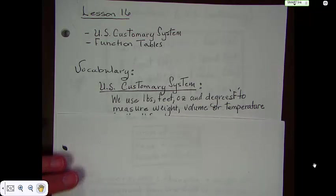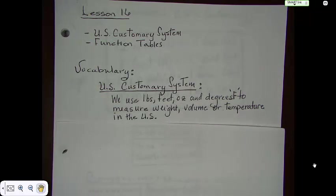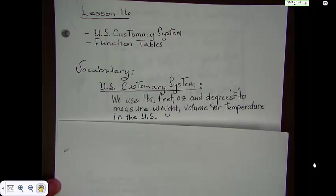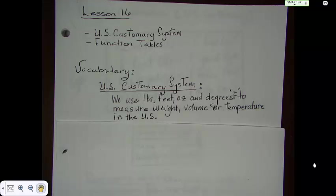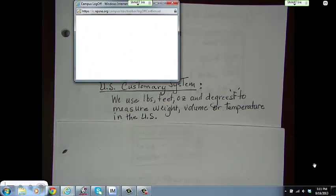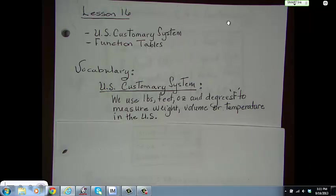Talking about the vocabulary, the US customary system is when we use feet, ounces, pounds and degrees Fahrenheit to measure weight, volume or temperature in the United States. It is a US system. It's one that we've been pretty much accustomed to using over the last, probably, since like forever.